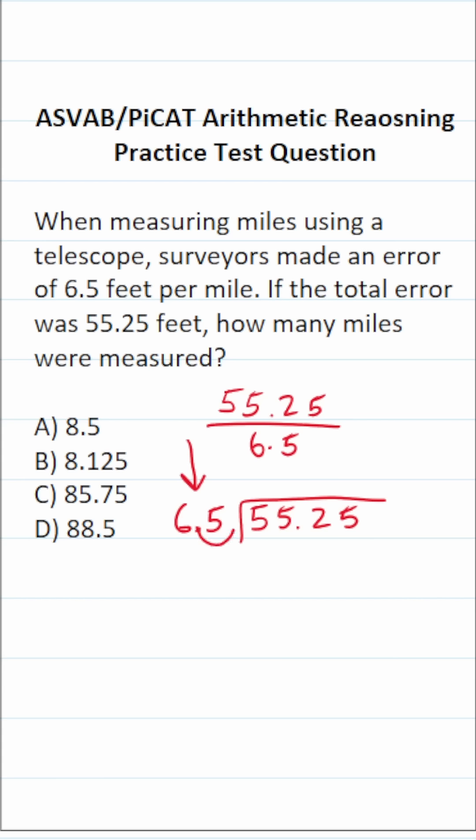That's going to prompt me to move the decimal in 6.5 one time to the right to make this 65. At the same time, I'm going to move the decimal in 55.25 the corresponding number of times to the right to make this 552.5.